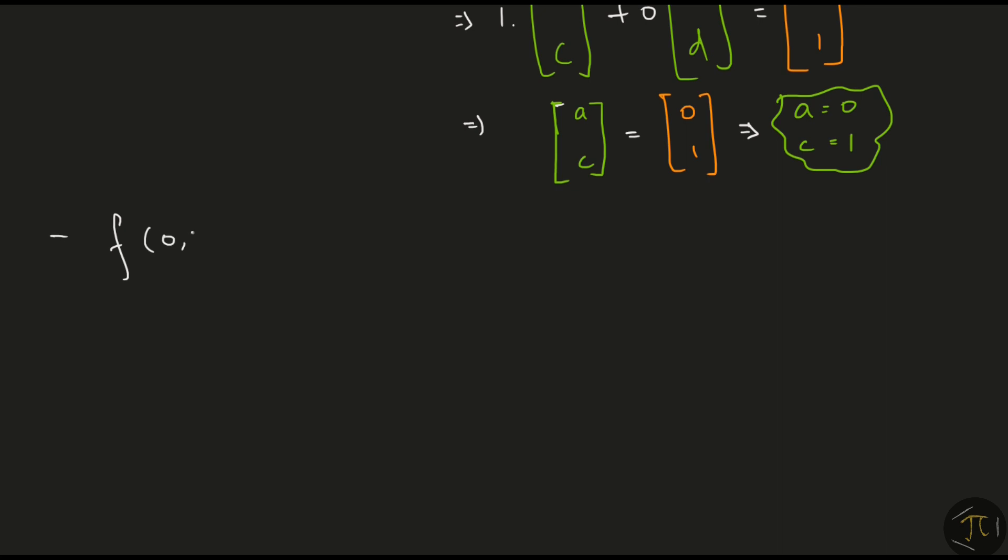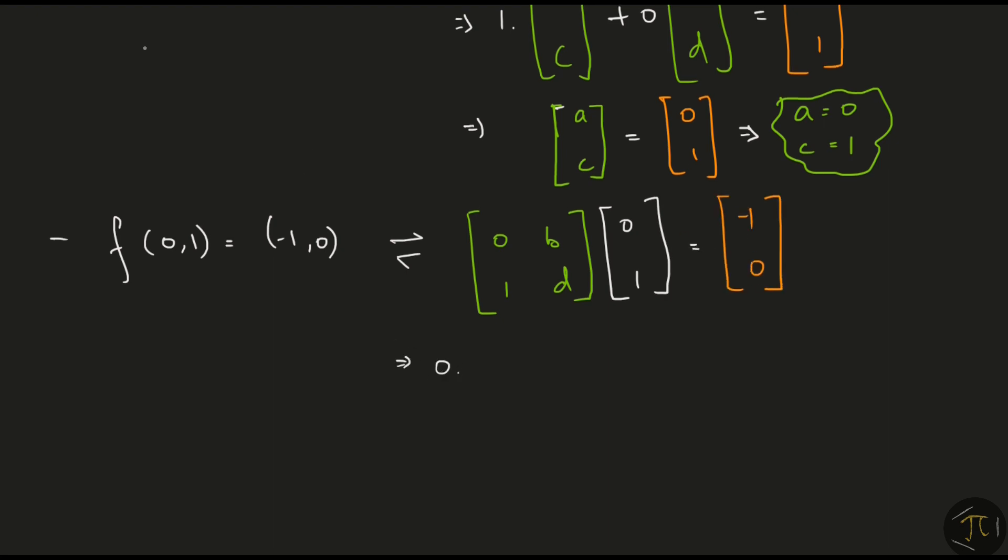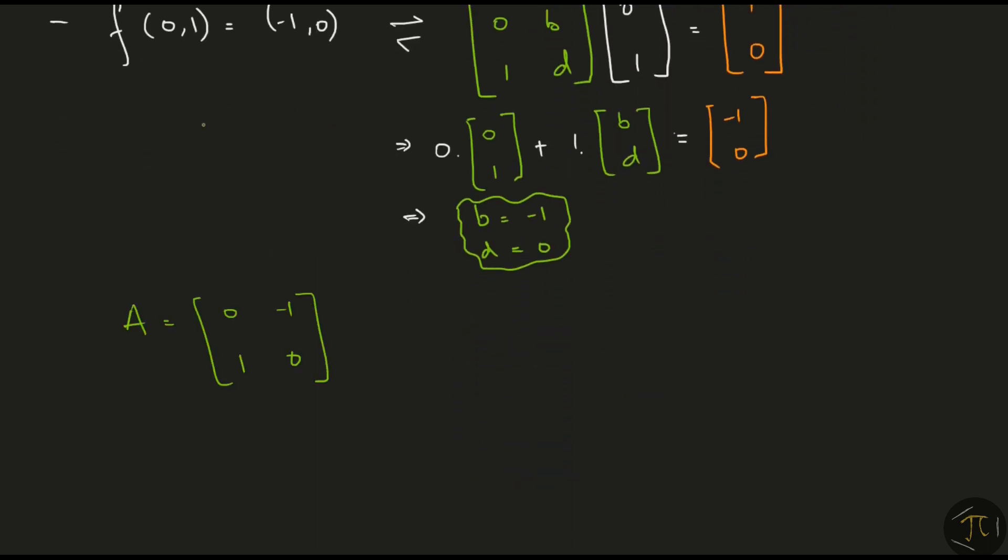Next, we input the other basis vector in the function. And now we want the matrix multiplied to this vector zero one and produce the same output minus one zero. Performing the matrix vector multiplication, we find this vector bd should be equal to minus one zero which gives us b is equal to minus one and d is equal to zero. Putting all the elements together, we have found the matrix A. But now take a closer look at the columns of this matrix. The first column is where i hat landed and the second column is where j hat landed after the transformation. This proves that the columns of the matrices are just the transformed basis vectors.